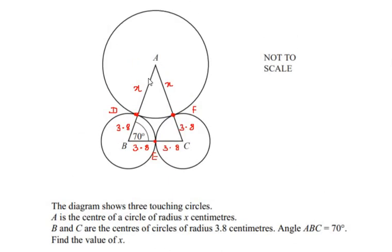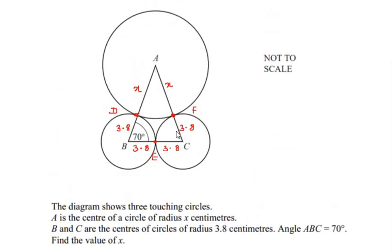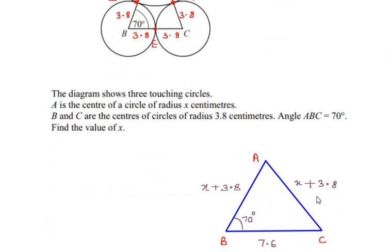Now if you look at the total length AB, it is the addition of x and 3.8, so I have written here the total length AB as x plus 3.8. The same thing happens with the side AC, this is also going to be the sum of x and 3.8. And the total length BC is going to be 3.8 plus 3.8 which gives us 7.6.